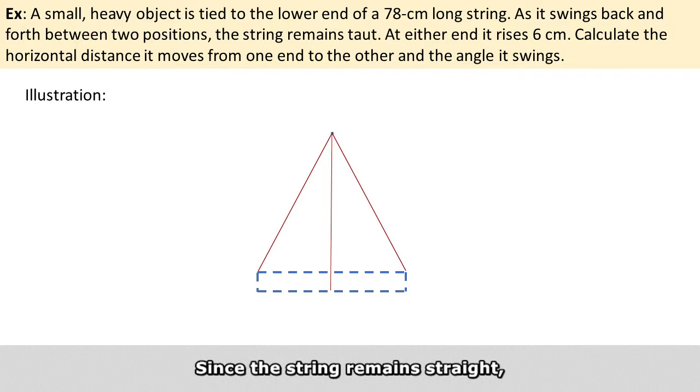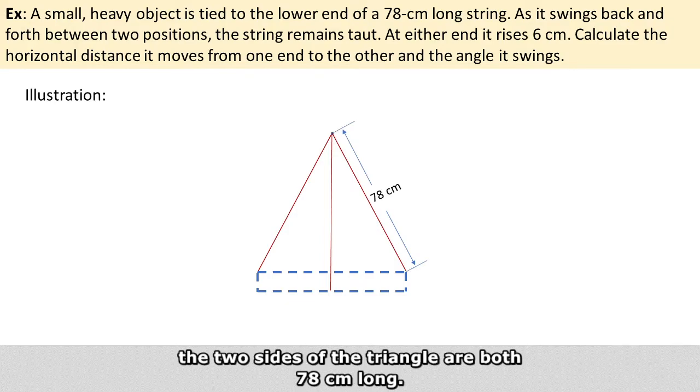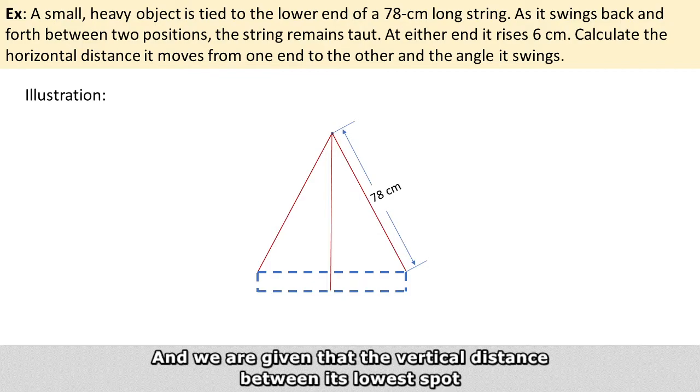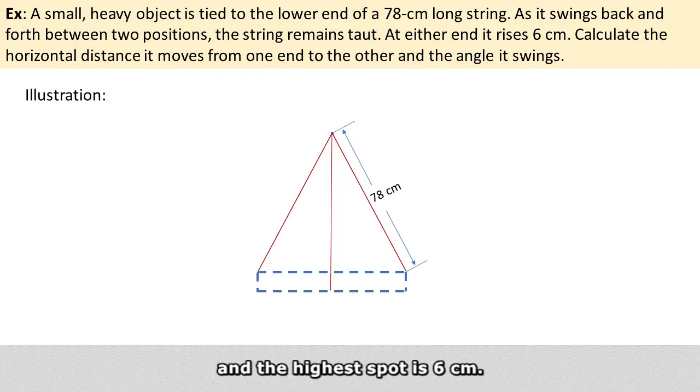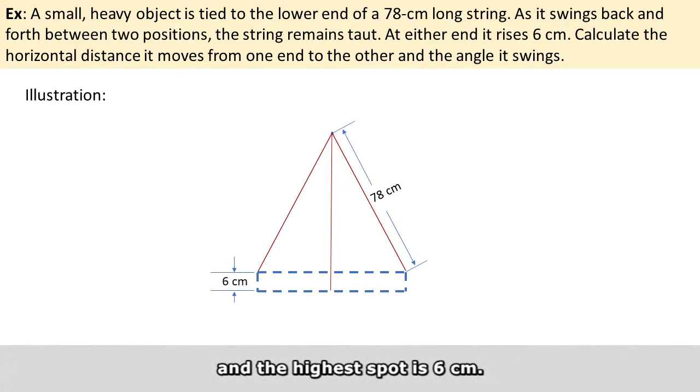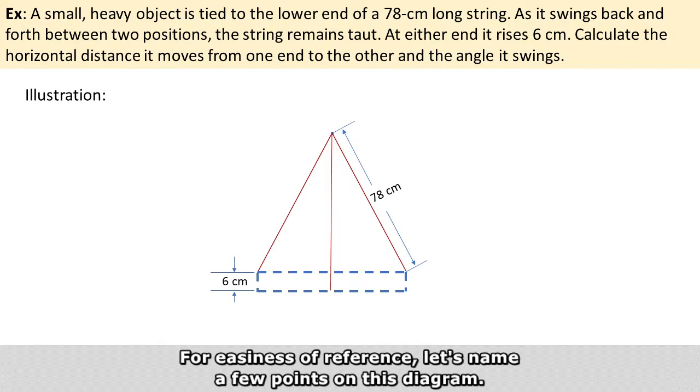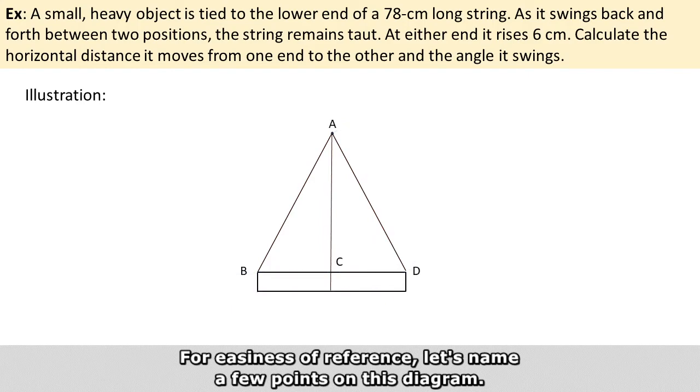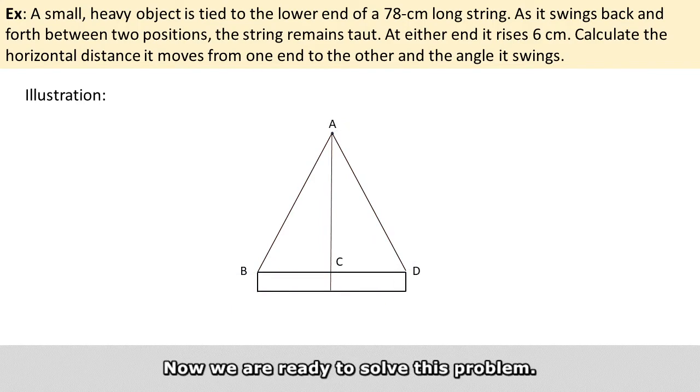Since the string remains straight, the two sides of the triangle are both 78 cm long. And we are given that the vertical distance between its lowest spot and the highest spot is 6 cm. For easiness of reference, let's name a few points on this diagram, and now we are ready to solve this problem.